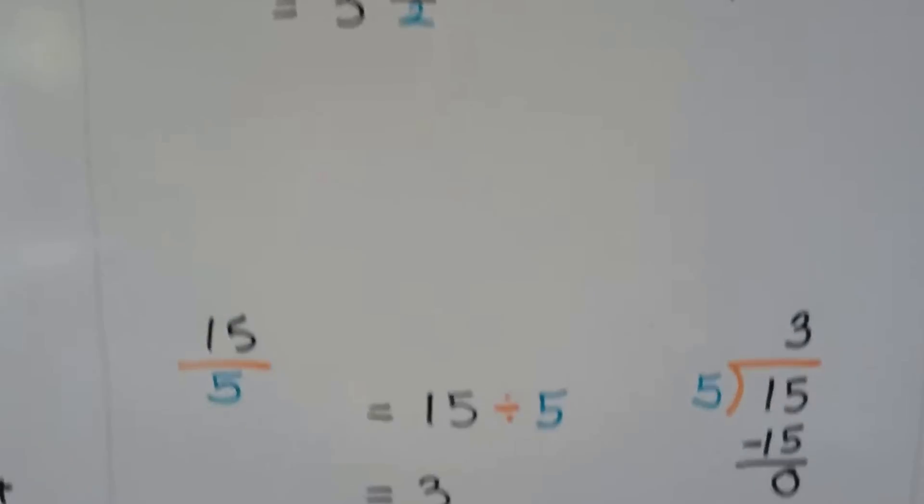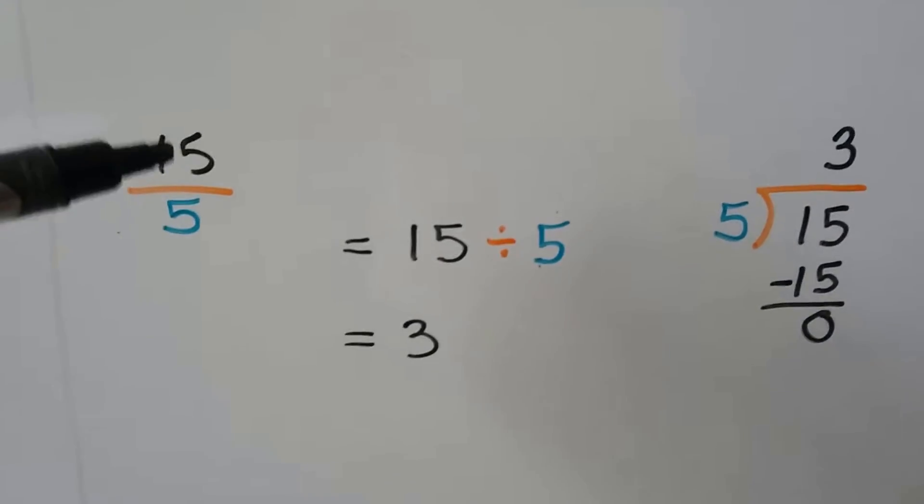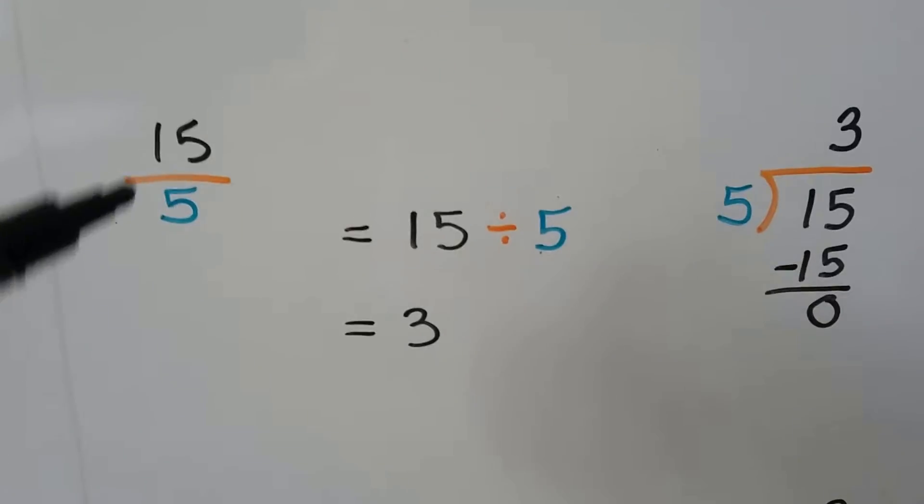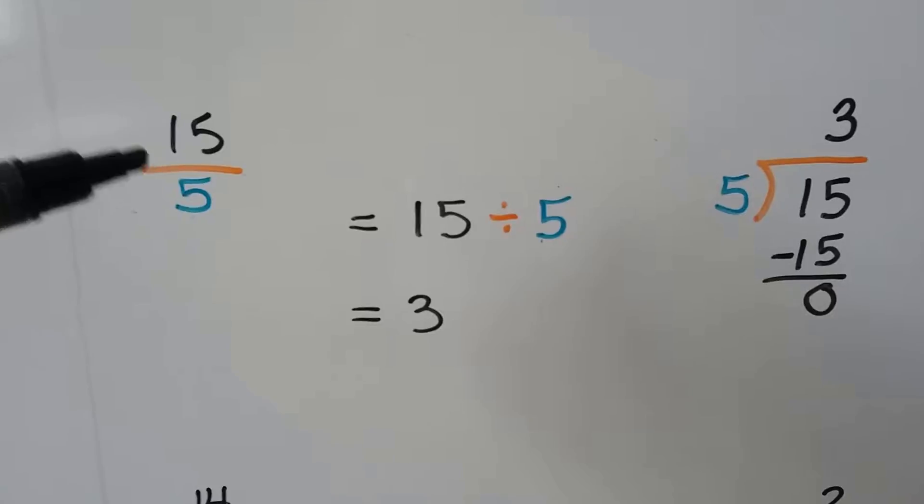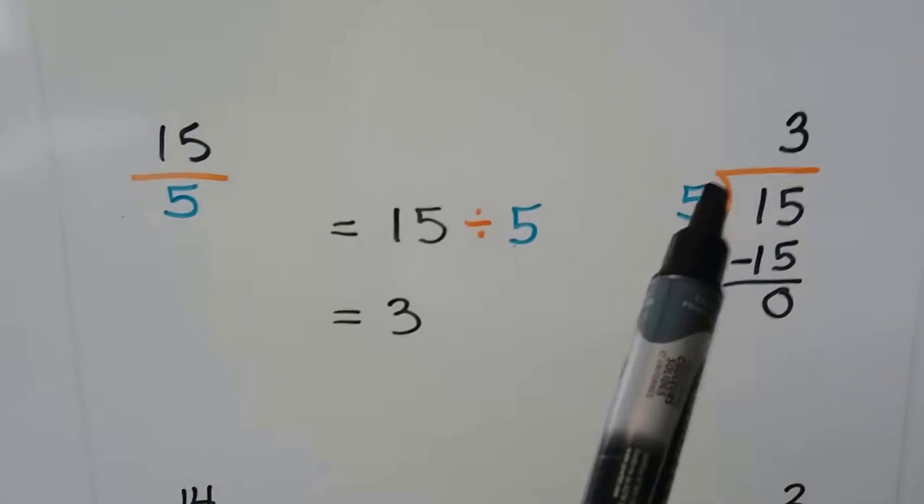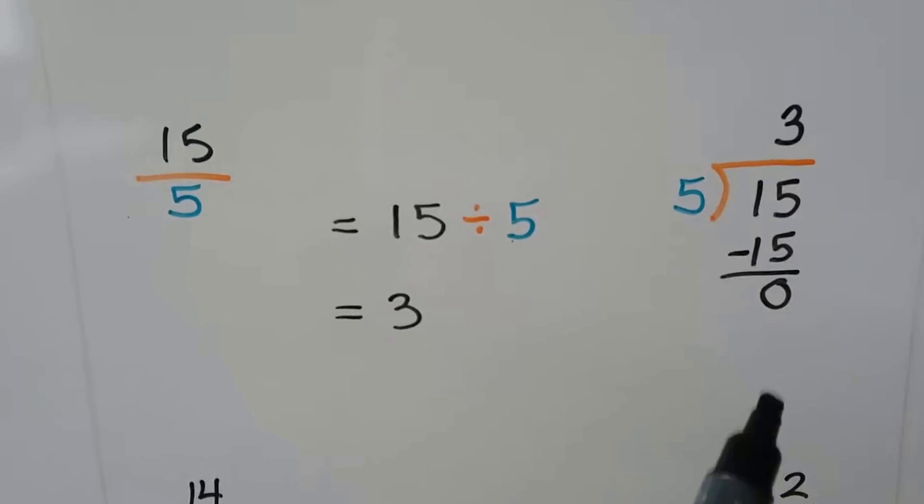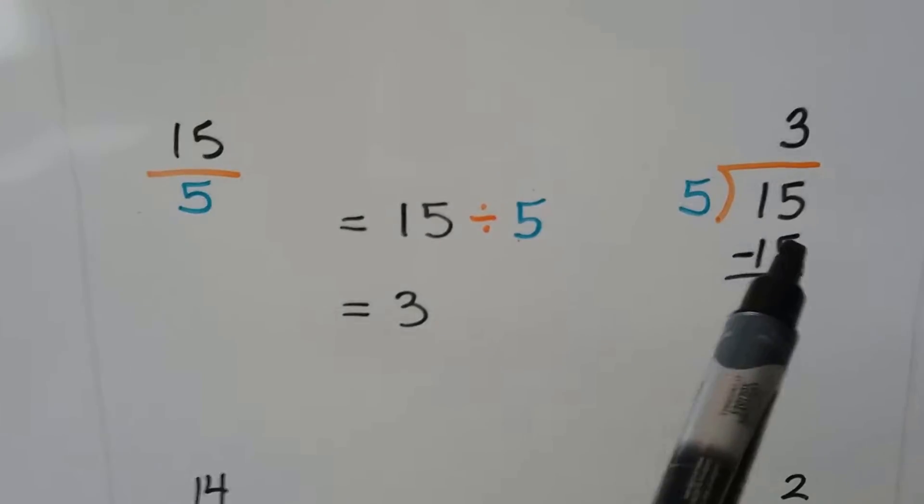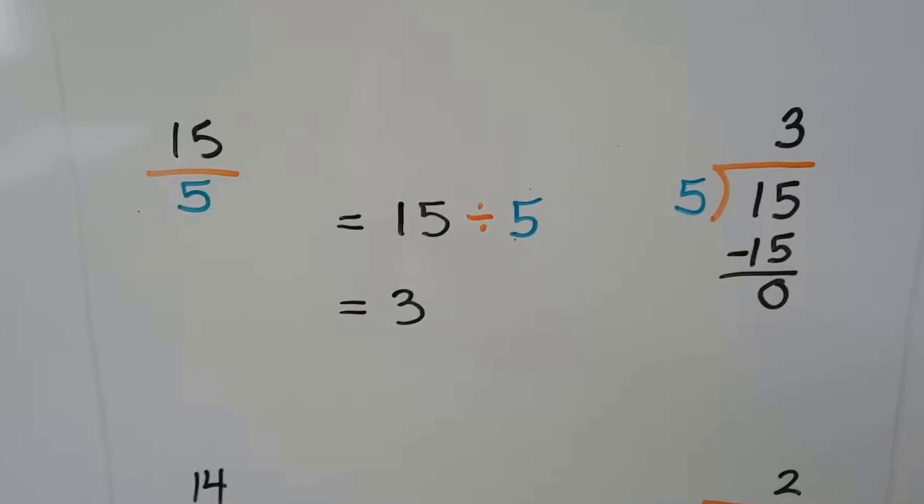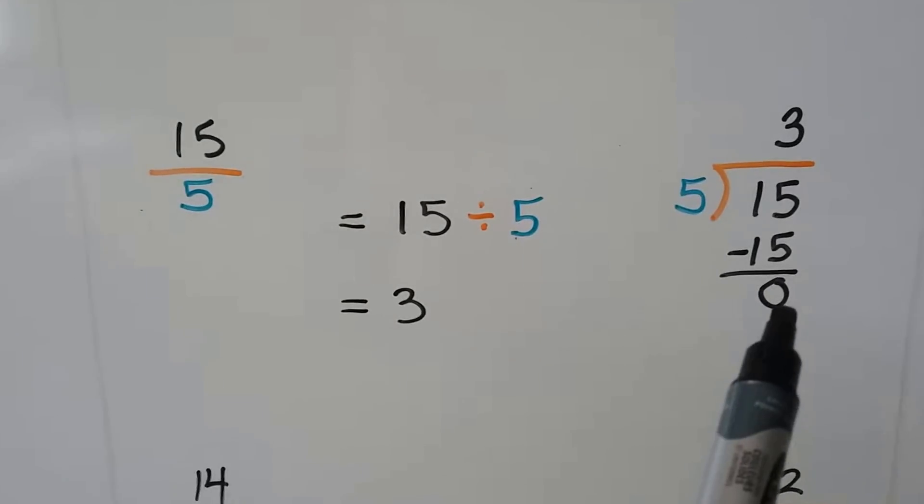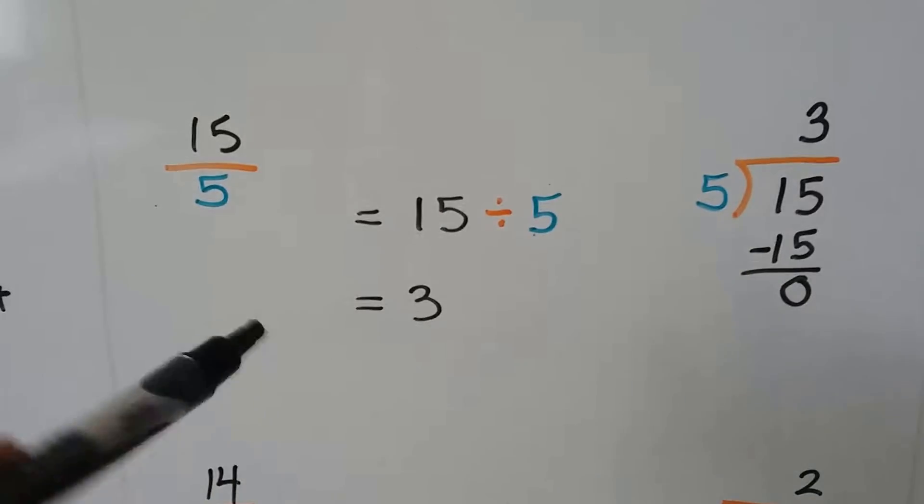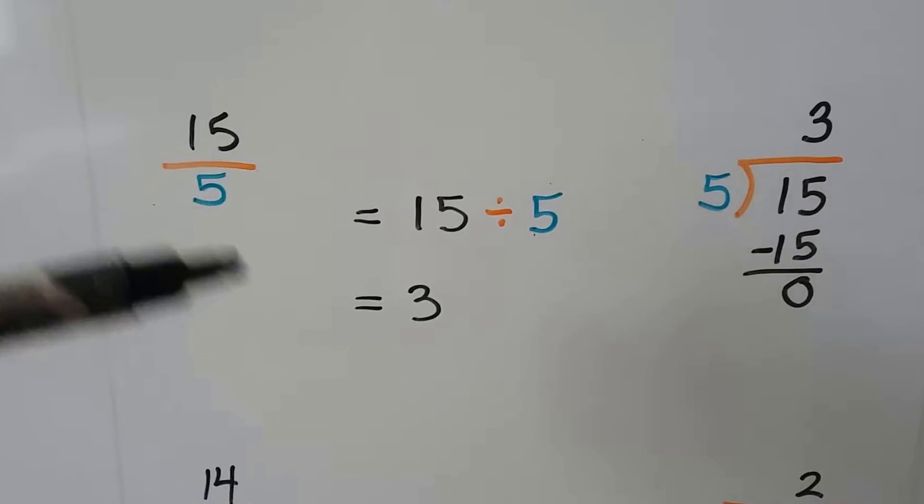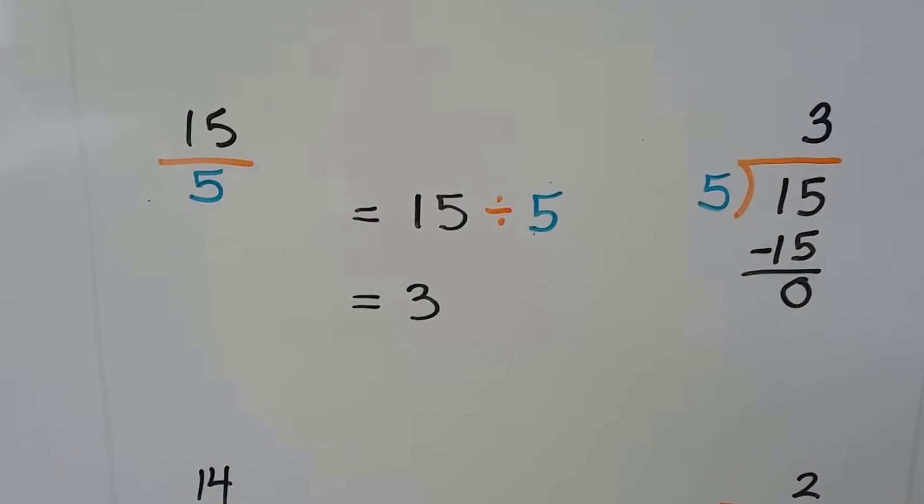Let's try this again. 15 fifths. What we do is 15 divided by 5. 15, fraction bar is divided by 5. How many times can 5 fit into 15? 3. We do the multiplication. We subtract the 15. We get 0. So the remainder is 0. So the answer is just 3. 15 divided by 5 is 3. 15 fifths is equal to 3 whole.